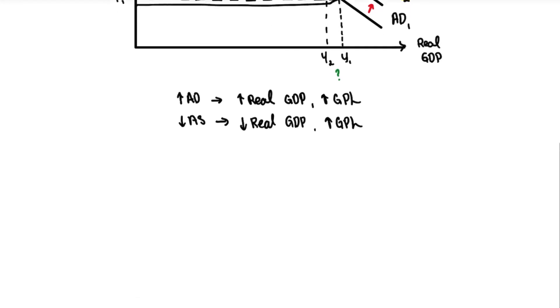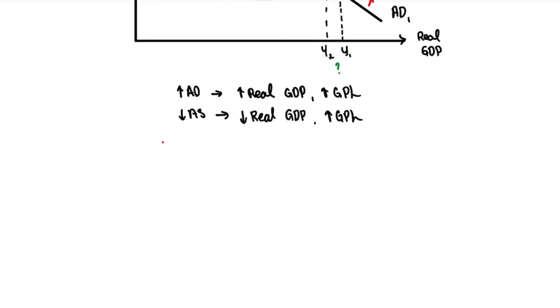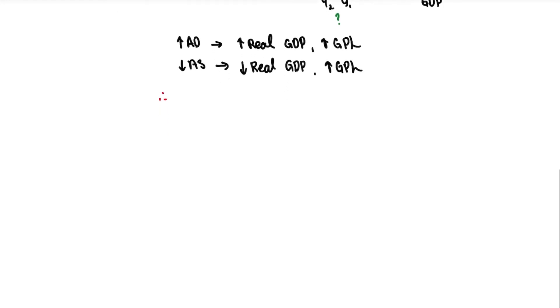From this you know that it is going to be certain that your general price level will increase. So your conclusion is that GPL will actually increase and your real GDP will be uncertain. The new real GDP is going to be uncertain and this will depend on the extent of change. And your new equilibrium GPL will actually increase since for both cases, both isolated cases, they will increase.